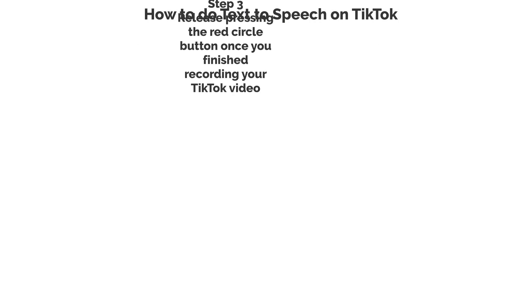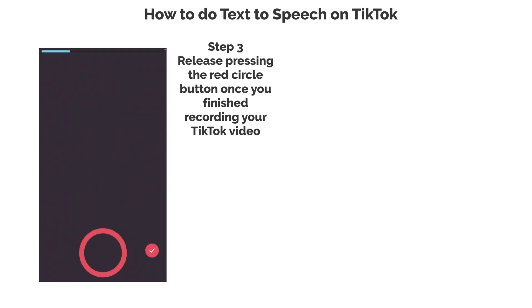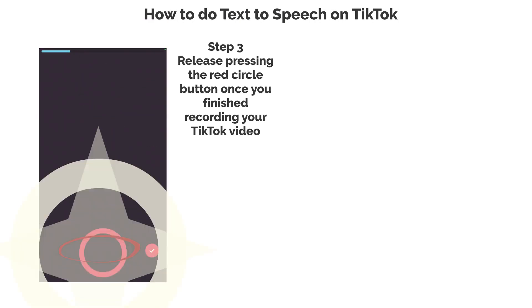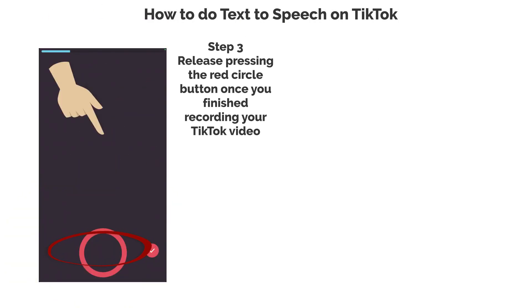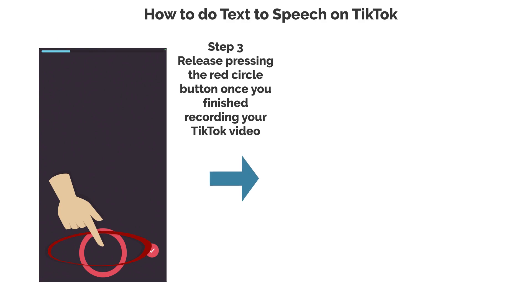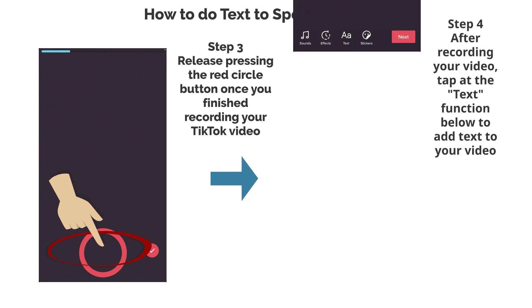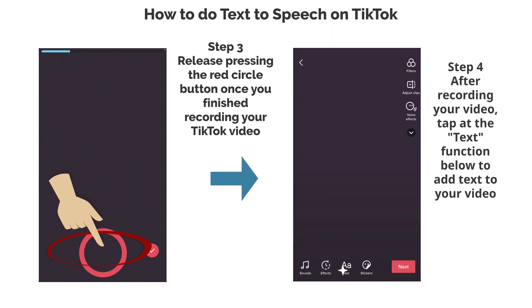Step 3. Release pressing the red circle button once you've finished recording your TikTok video. Step 4. After recording your video, tap the text function below to add text to your video.